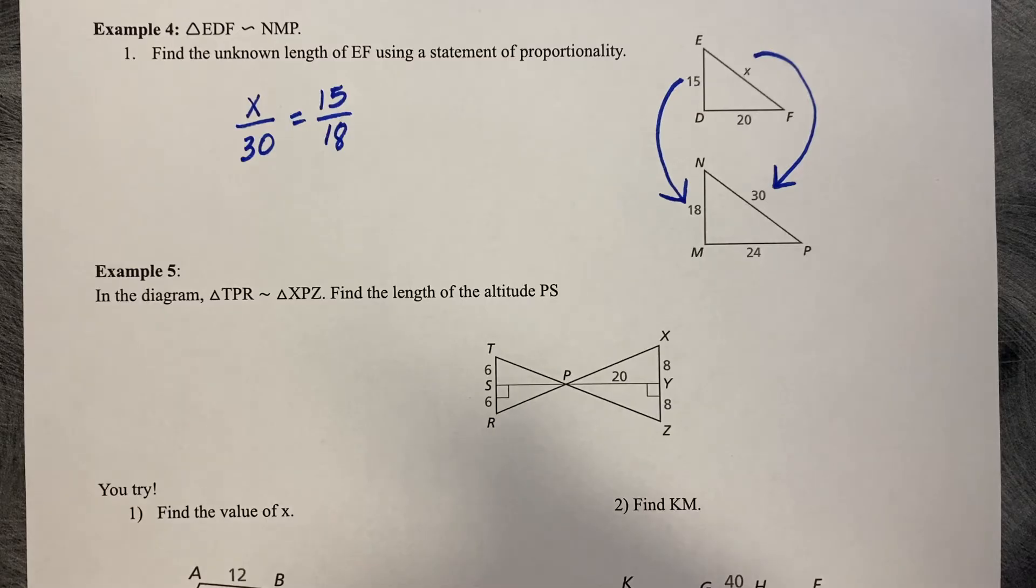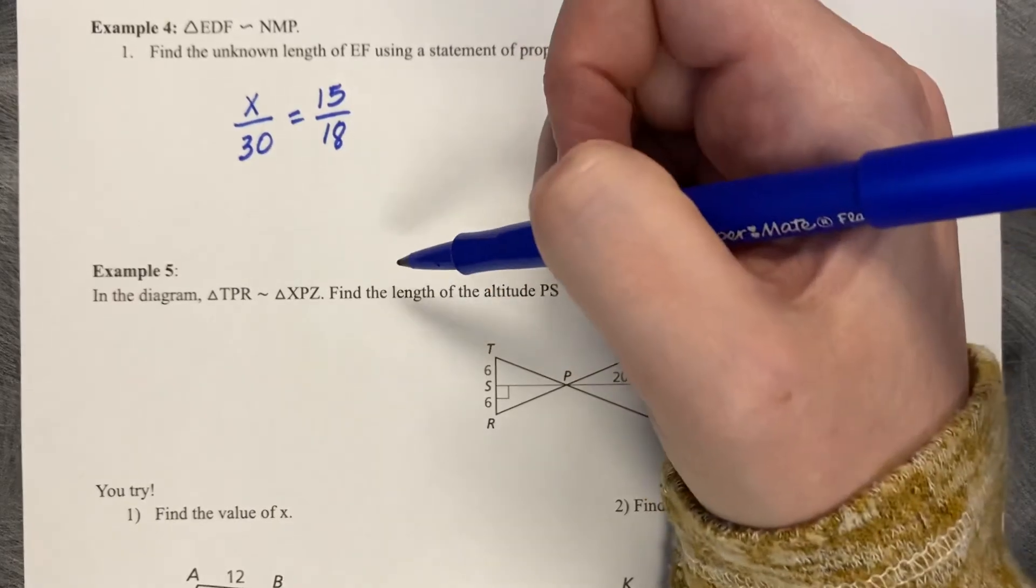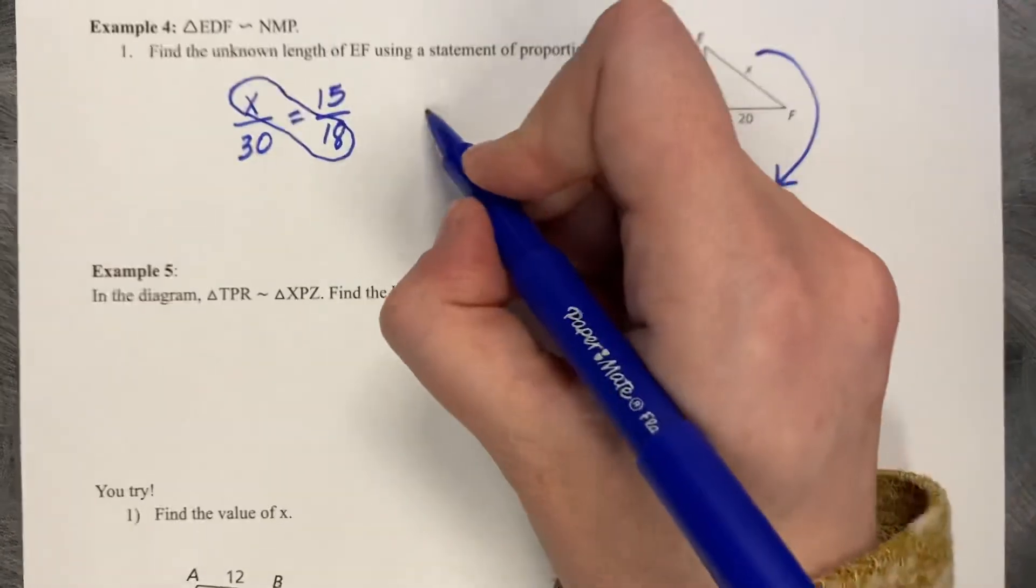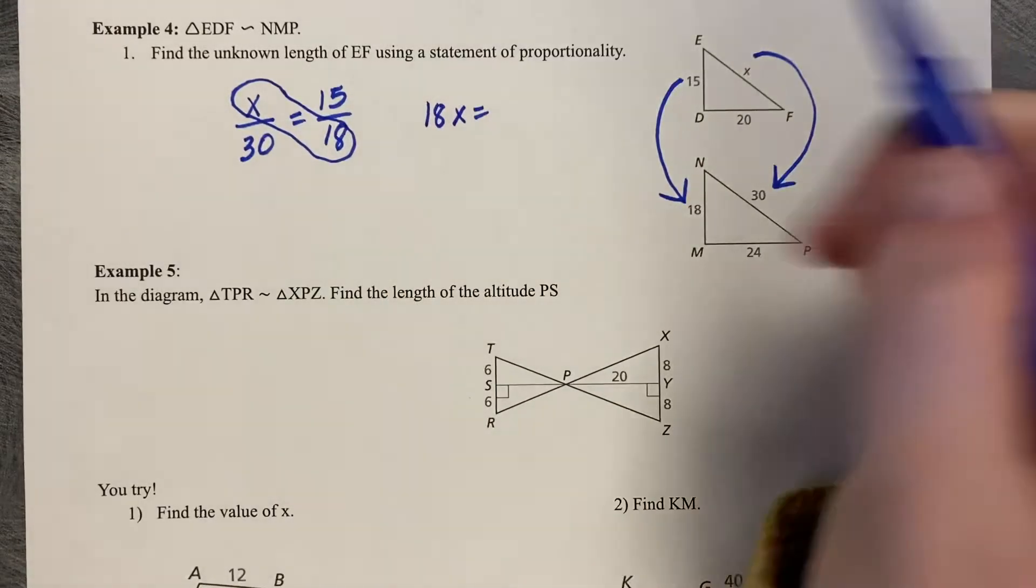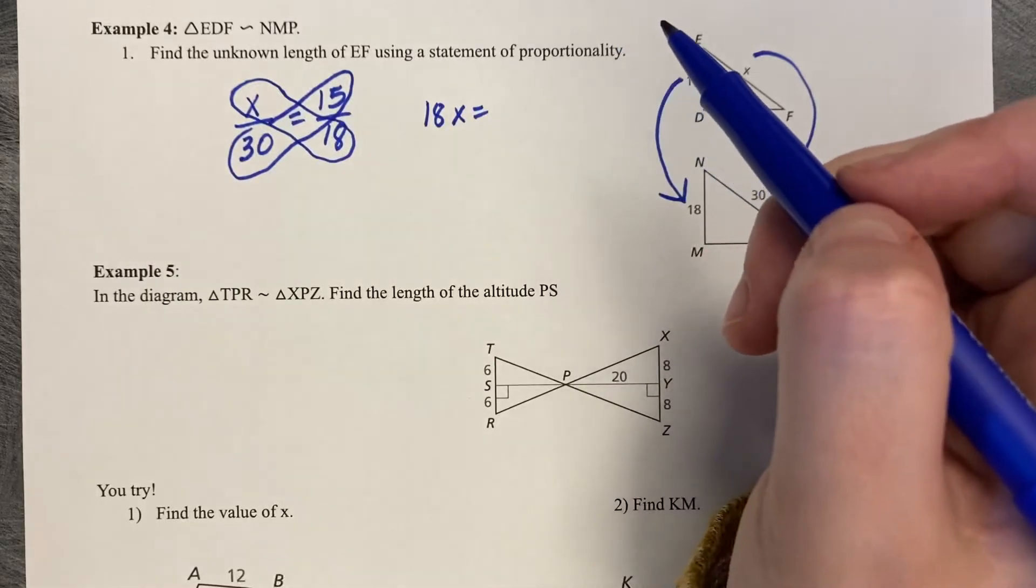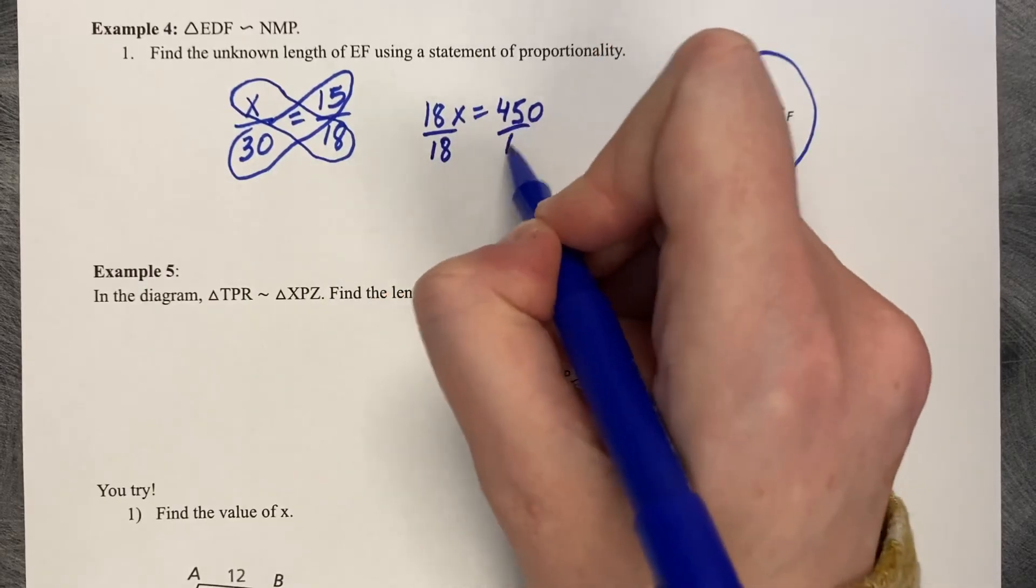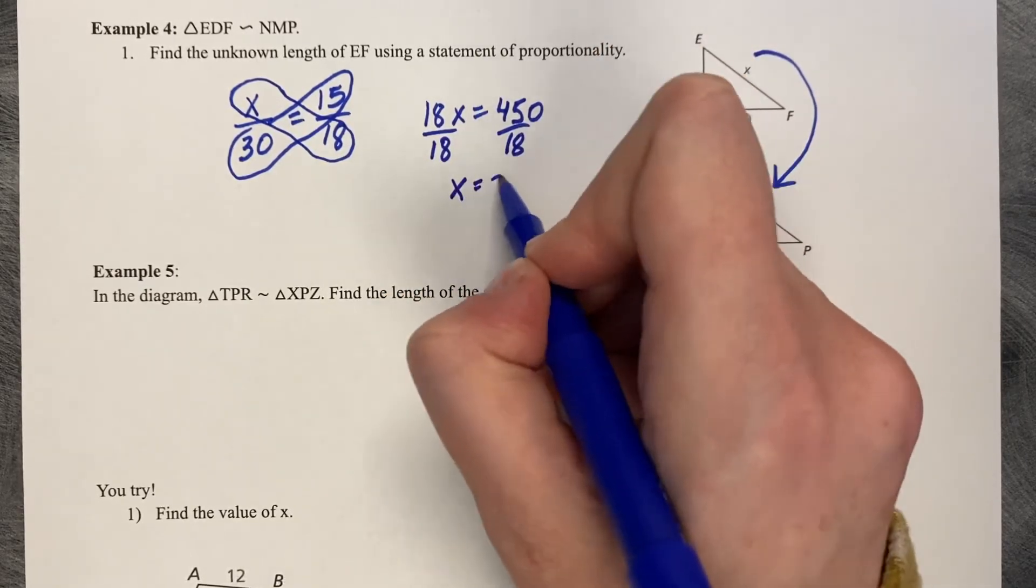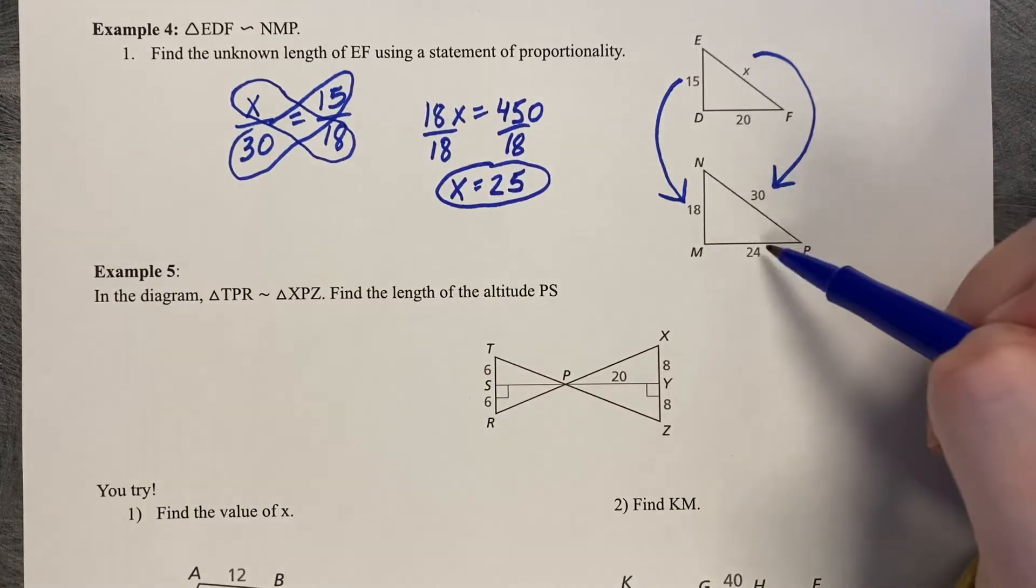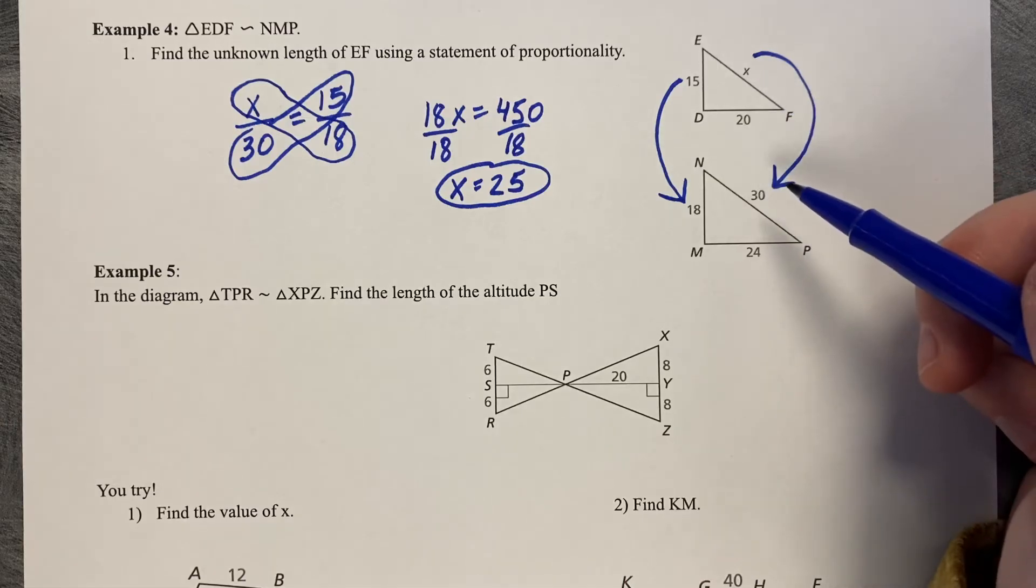So now we have a fraction equal to a fraction. The best way and most efficient way to solve a fraction equal to a fraction is to cross multiply. So we're going to do X times 18, which is 18X. And then 30 times 15, which is 450. Divide by 18, and we get X equals 25. Then you can check and see if that seems reasonable. Yeah, if this is 24 and 30, then 20 and 25 seems reasonable.